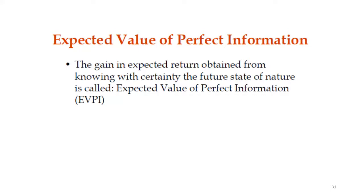Now let's talk about the Expected Value of Perfect Information (EVPI). The EVPI is the gain in expected return obtained from knowing the certain future state of nature. It is computed as the Expected Return with Perfect Information (ERPI) minus the Expected Return of the Expected Value (EREV). We will solve a numerical example so it is more clear how to compute EVPI.